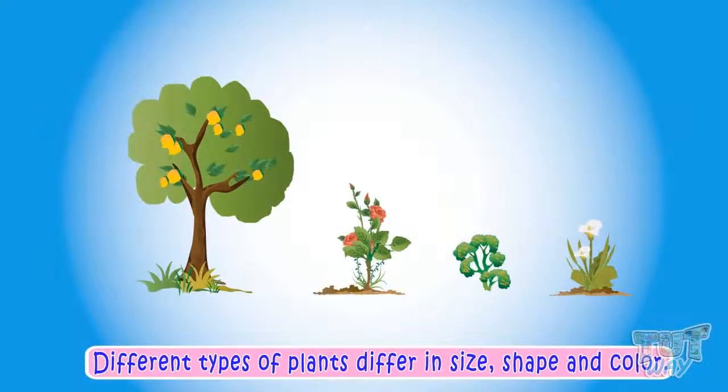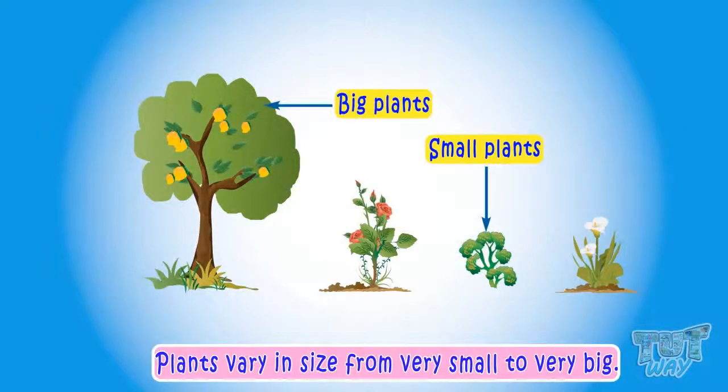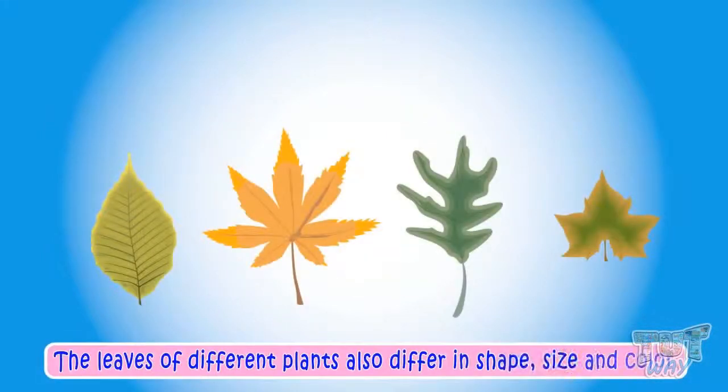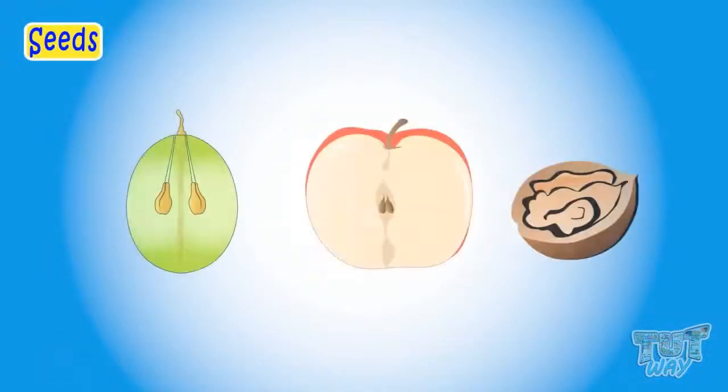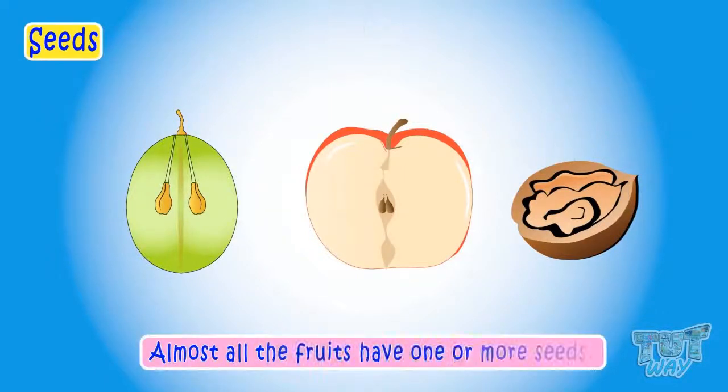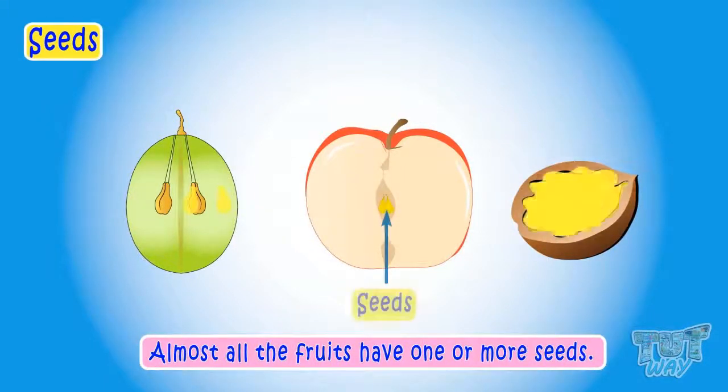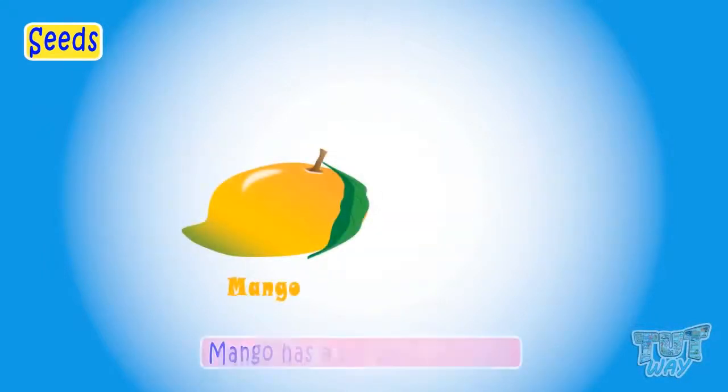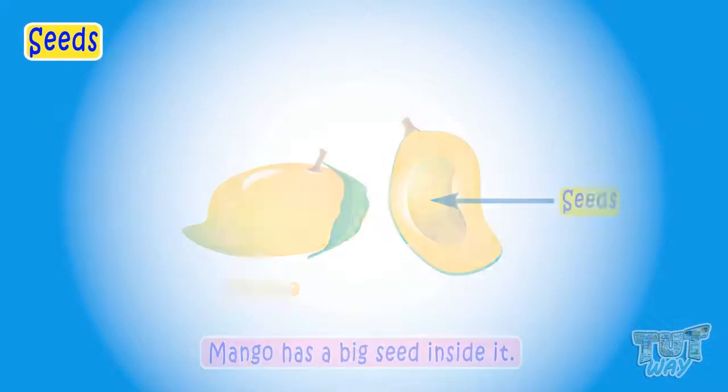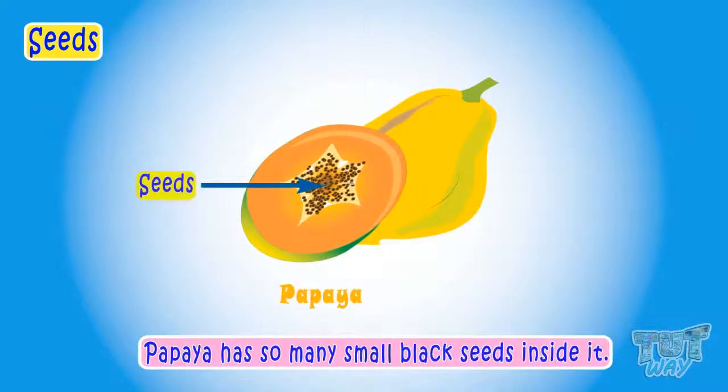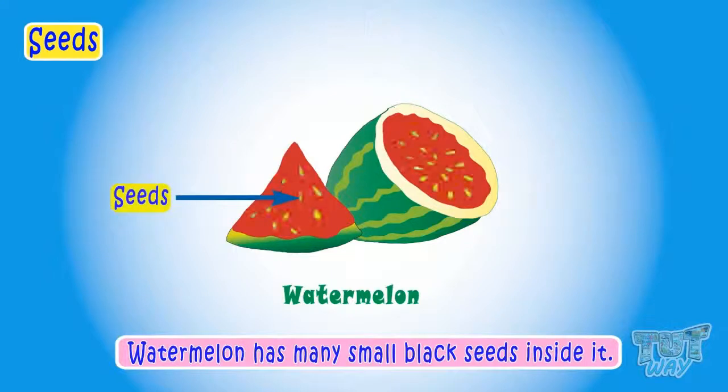There are many different types of plants. Different plants differ in sizes, shapes, and color. Plants vary in size from very small to very big. Plants leaves also differ in shape, size, and color. Kids, let's see what are seeds. Almost all the fruits have one or the other type of seed in them, like mango has a big seed inside it. Papaya has so many small black seeds inside it.